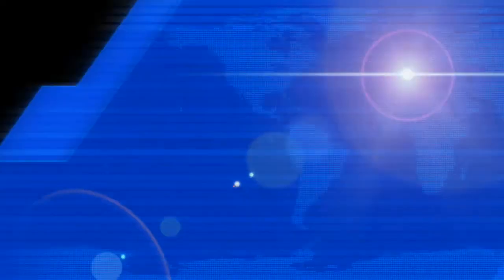In terms of the sources of hyaluronic acid injections in the United States for treating osteoarthritis, there are a few things to consider: first, the actual molecular weight or size — the larger the molecule, the more effective it seems to be. We also look at structure, whether it's straight-chained, which is the normal form, or cross-linked, as cross-linking tends to allow the molecule to have more residual time within the joint. Finally, how it's manufactured — some are made from rooster combs, and some by bacterial fermentation, which tends to produce purer products with fewer contaminants.